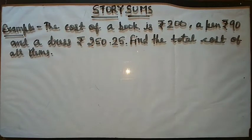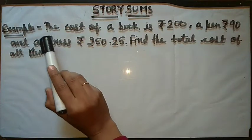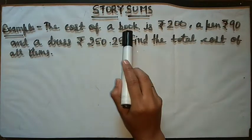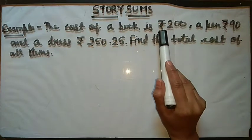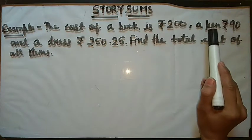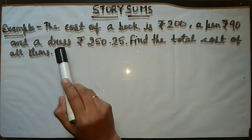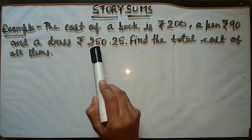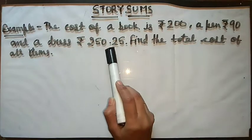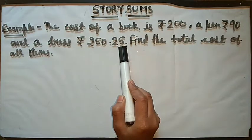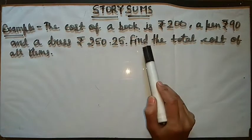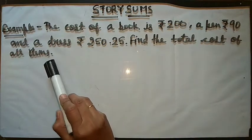Today we will learn how to do story sums. You can see example is given. The cost of a book is Rs 200, a pen Rs 90 and a dress Rs 250.25. Then find the total cost of all items.